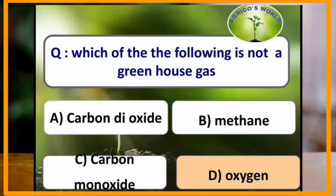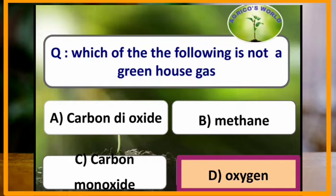Which of the following is not a greenhouse gas? Oxygen is not a greenhouse gas. Carbon dioxide, methane and carbon monoxide — all three are greenhouse gases.